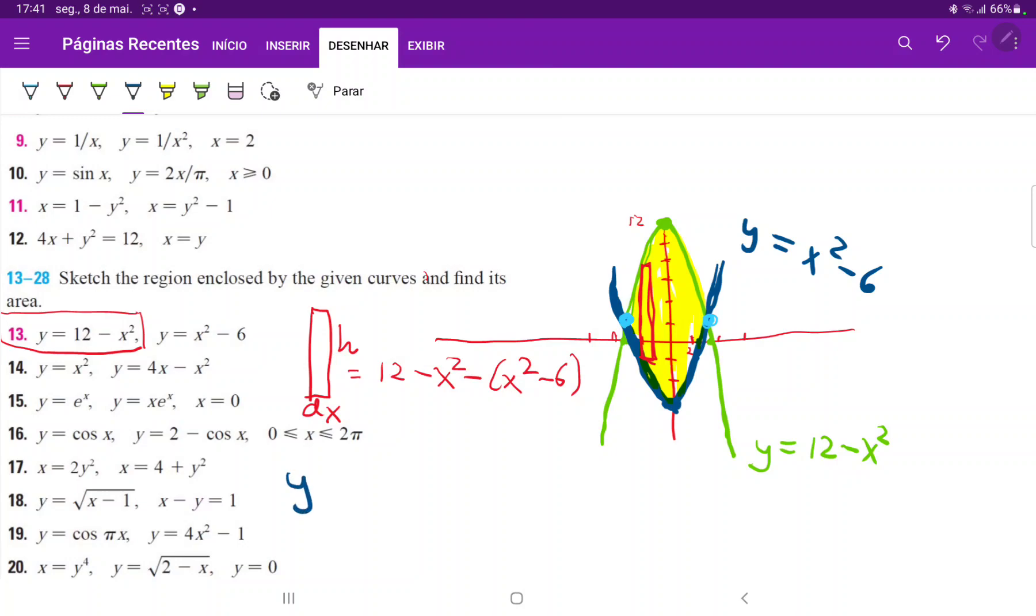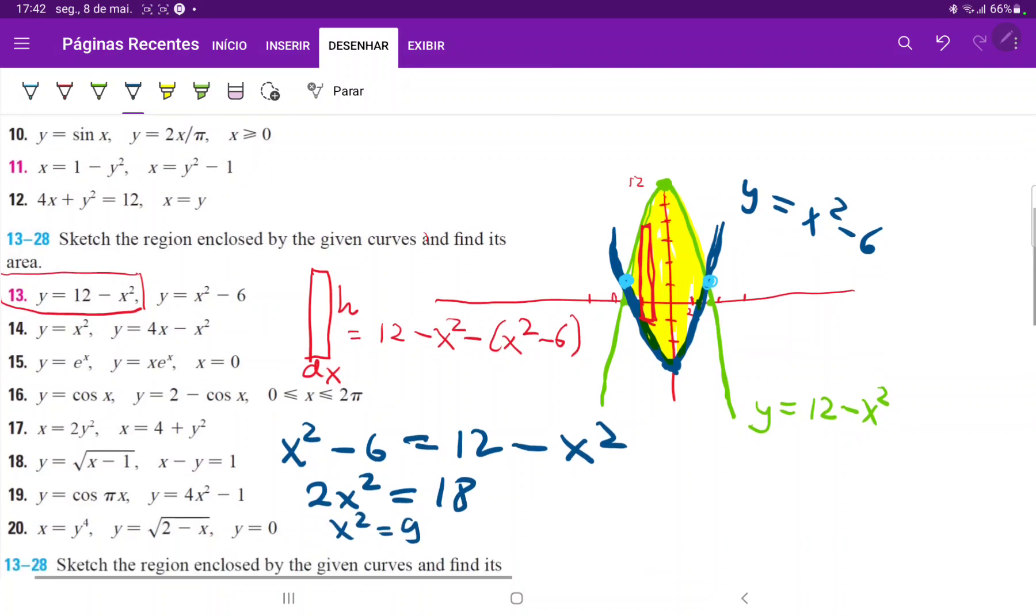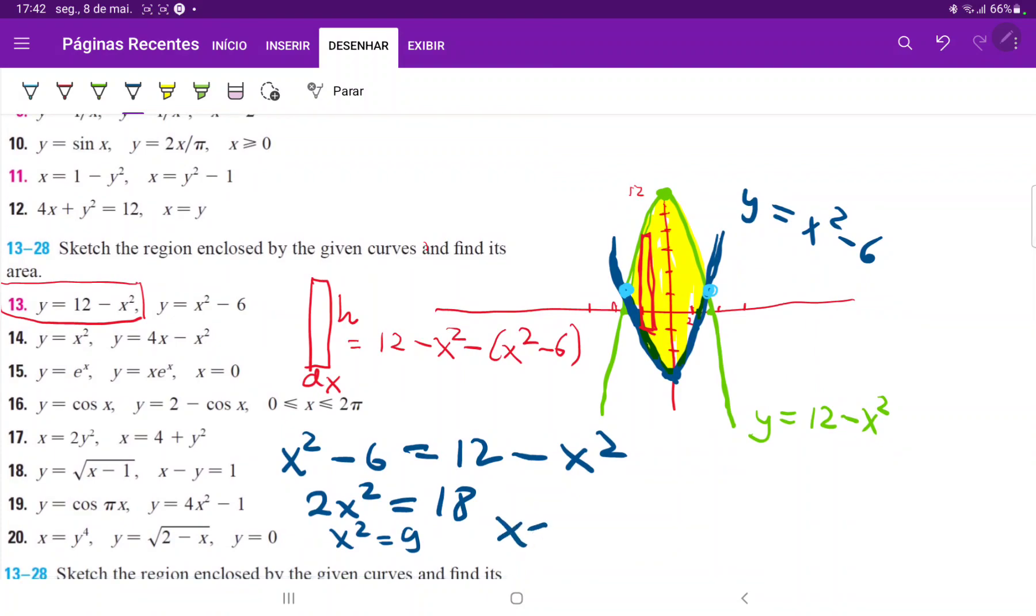So we have x squared minus 6 is equal to 12 minus x squared. So I'll just bring, oops, that is x squared minus 6. And I'll just bring the x's to one side and the numbers to the other. So I'll bring the x to the left. So that is 2x squared. And then the 6 to the right, which is equal to 18. So x squared is equal to 9. And therefore x is equal to plus minus 3.